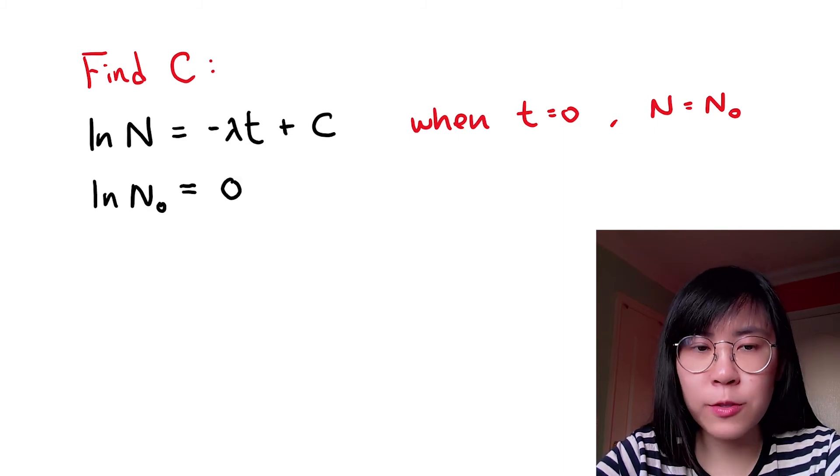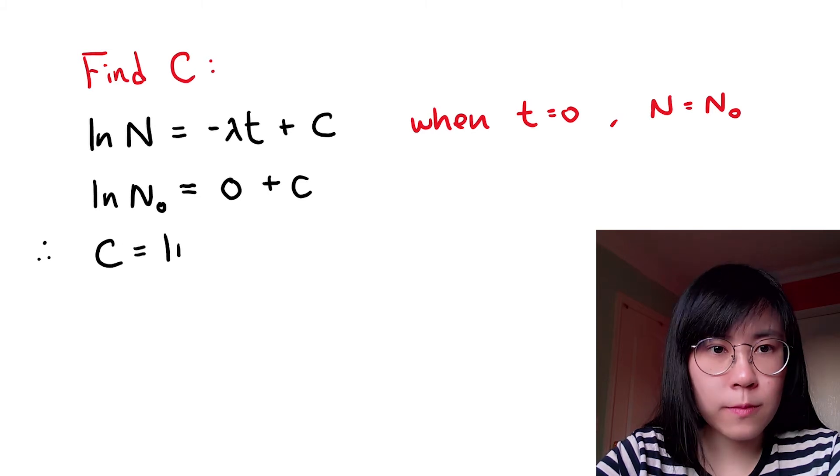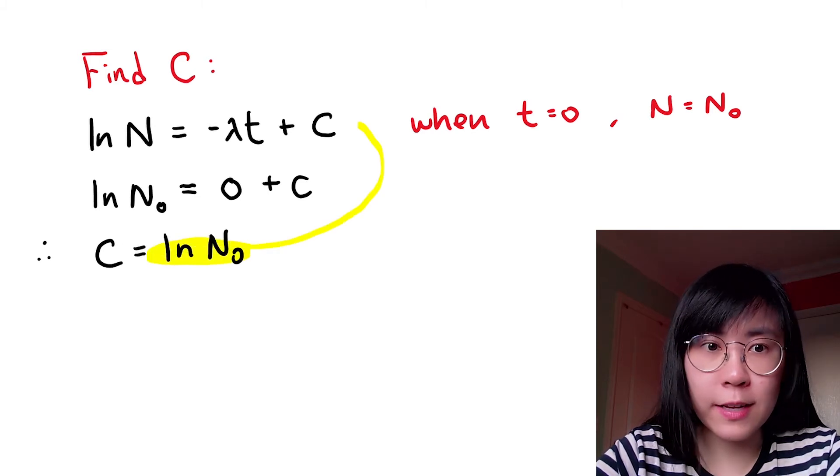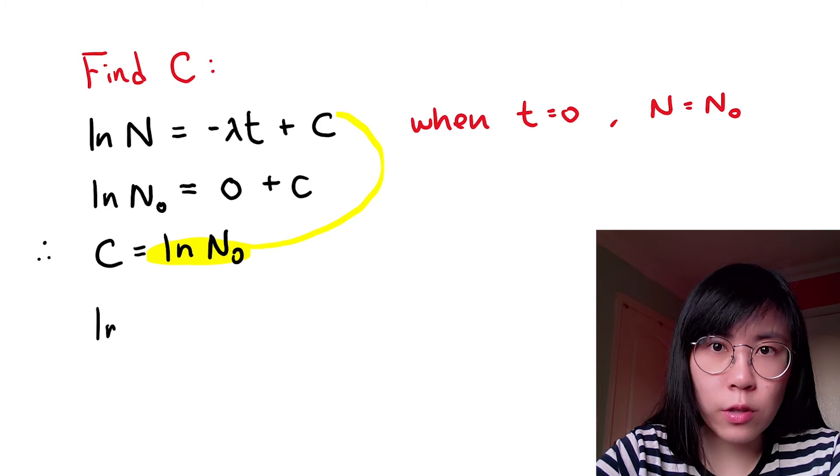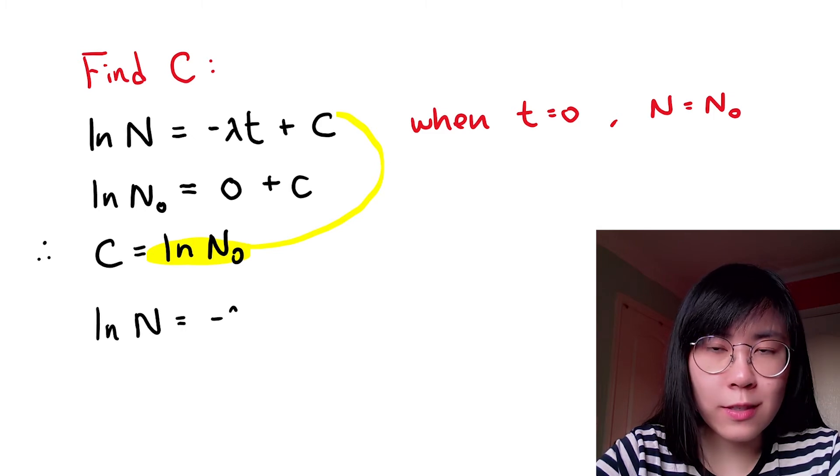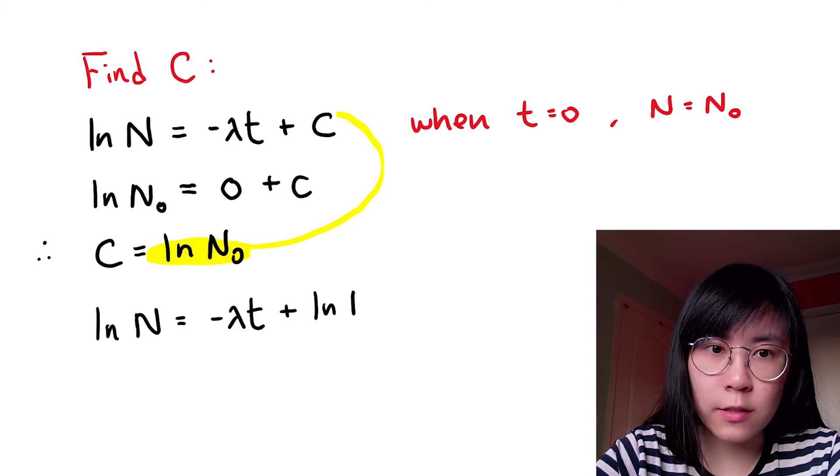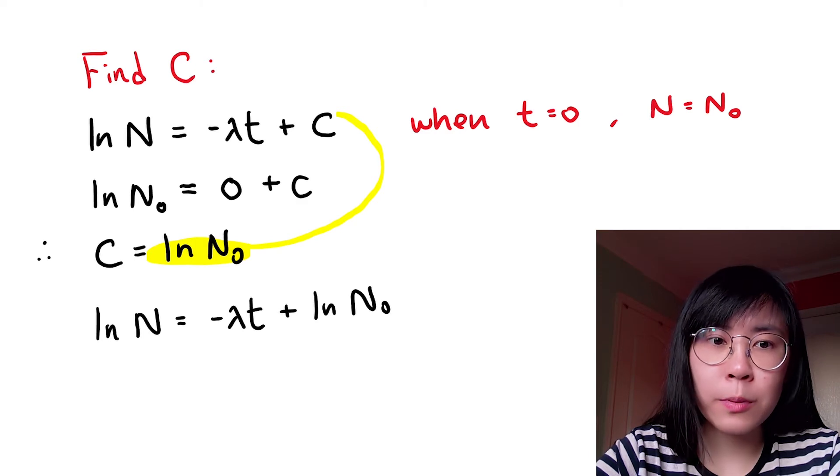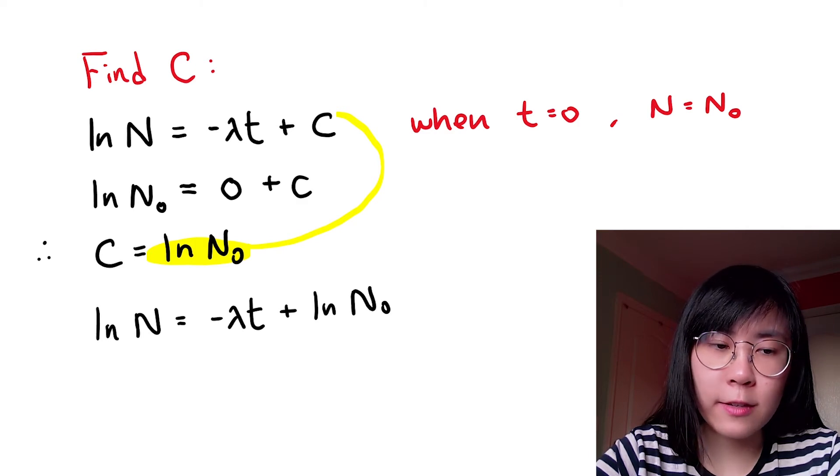So N becomes N sub zero. We can now put it back into our indefinite integral to get natural log of N is equal to the negative of the decay constant times time plus the natural log of N sub zero.